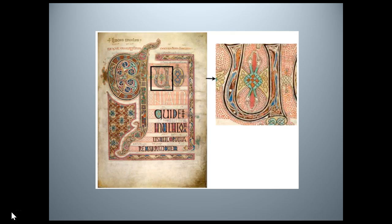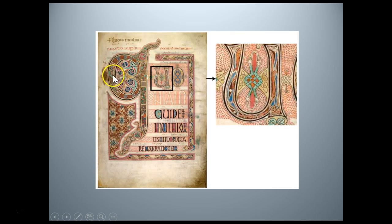We see animal forms, snakes, these blue pinwheel-shaped forms that rotate in repetitive circles — and this is all happening within the outline of the letter Q. The larger Q shape we're seeing is the beginning of a quote which translates as 'as many have taken it in hand to set forth an order.' You are responsible for this one — it's on your AP College Board 250 list.